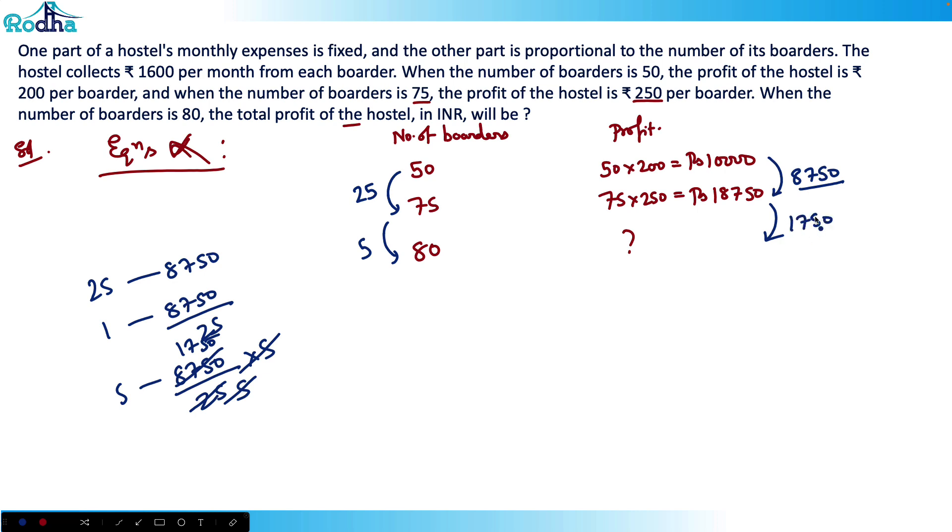Right now the profit is 18,750. An increase of 1750 will take it to rupees 20,500. 18,750 plus 1,750 equals 20,500.